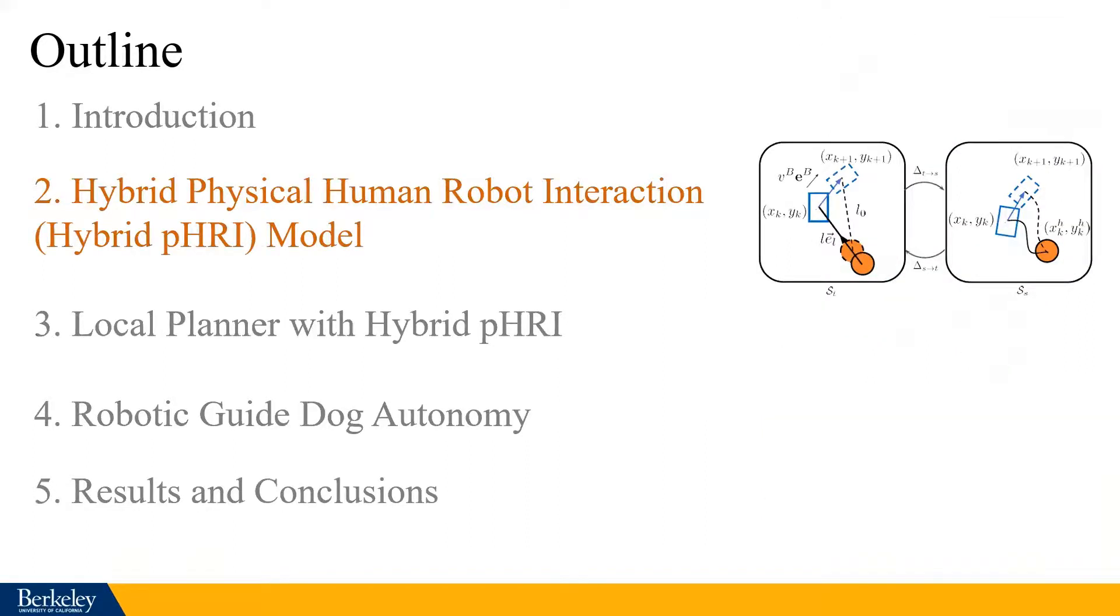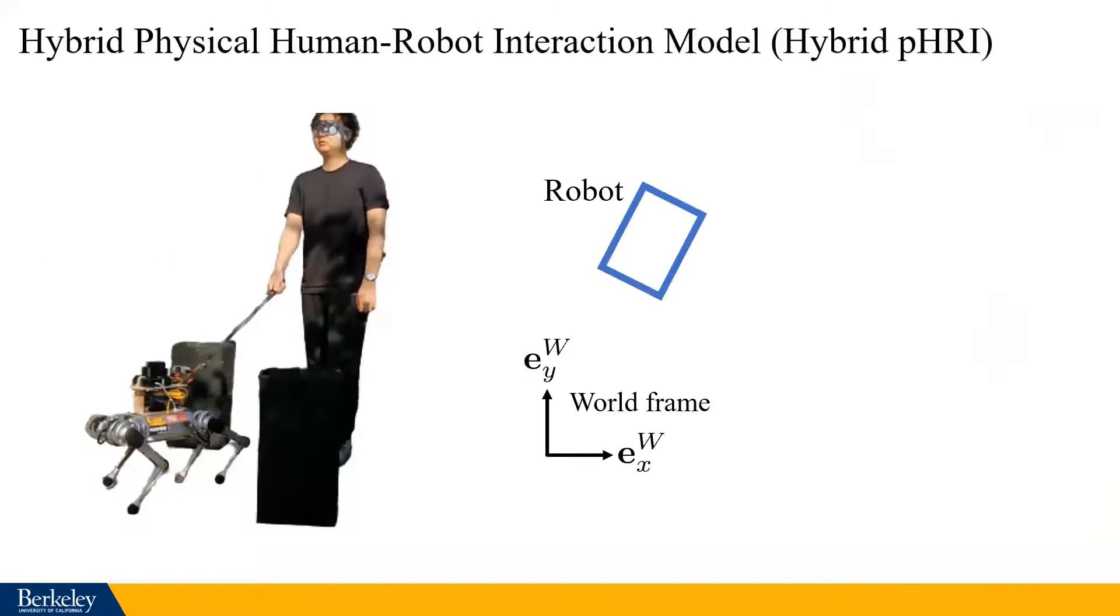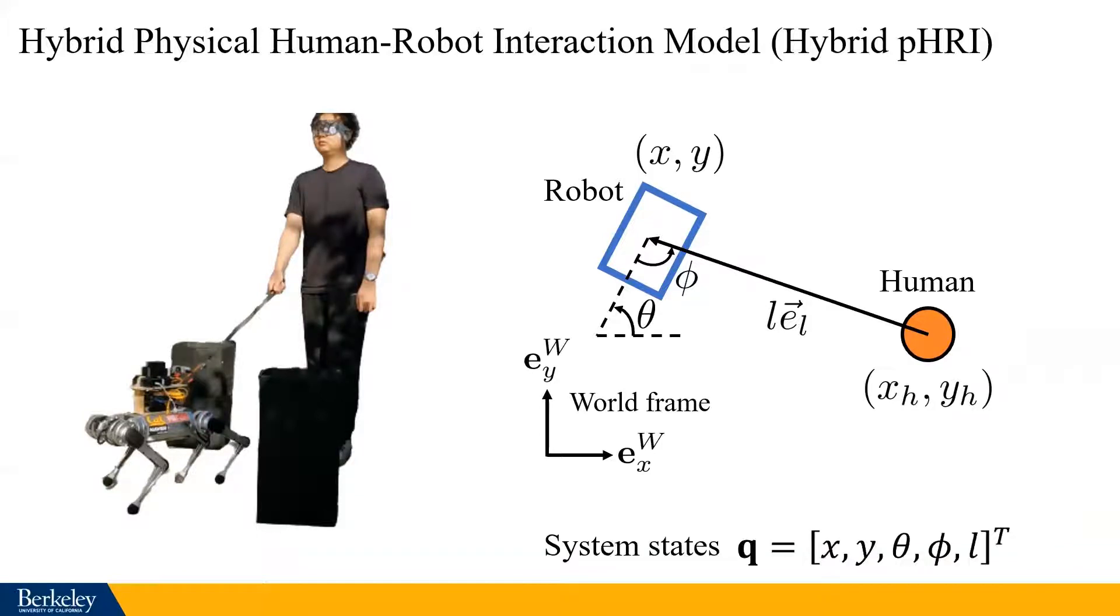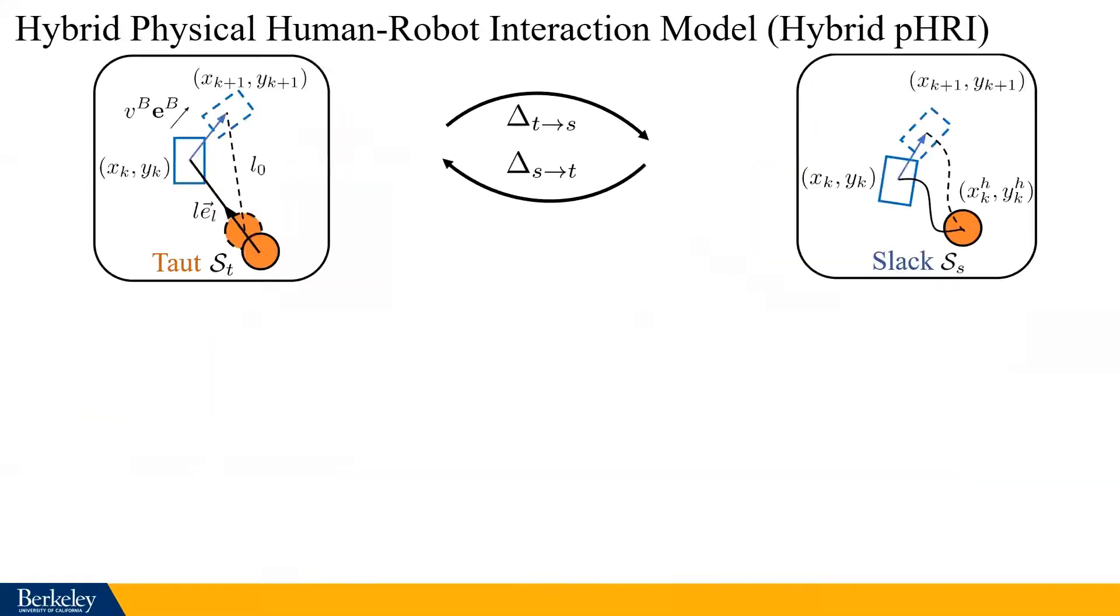Let's introduce modeling first. We describe the robot leading human system in the 2D world frame. The robot has its position and the turning yaw. The human being led has his or her positions. The robot uses a leash to guide the human, so the leash has its own length and its orientation with respect to the robot. We can assume that human will always hold the leash. Therefore, the human position can be represented by only the system states, which include the robot 2D position x,y, turning yaw theta, the leash angle phi, and the leash length L. We also define the robot frame attached to the robot body. Then we can define the robot velocity in the body frame.